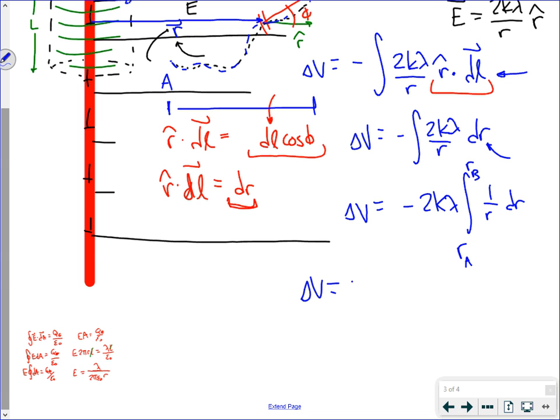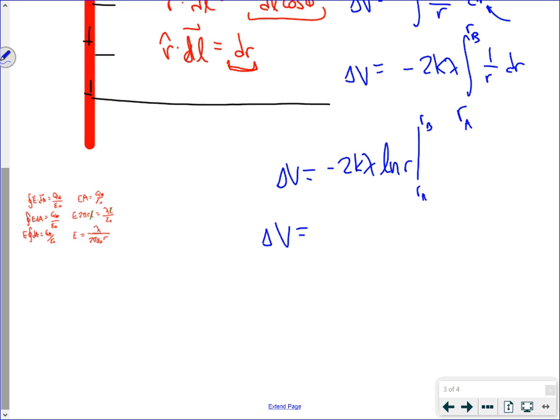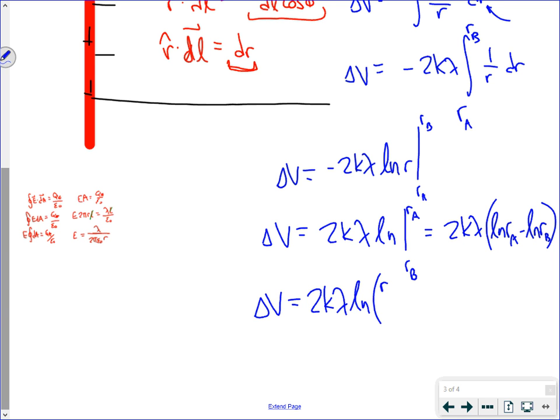So delta V is negative 2K lambda. The integral of 1 over R DR, as most of you know, is natural log of R. And we are integrating from RA to RB. I'll employ the fact that we can get rid of our negative sign by switching our limits of integration which says this is 2K lambda natural log RA minus natural log RB. Or we can apply properties of natural logs and say that this is the natural log of RA over RB times 2K lambda.